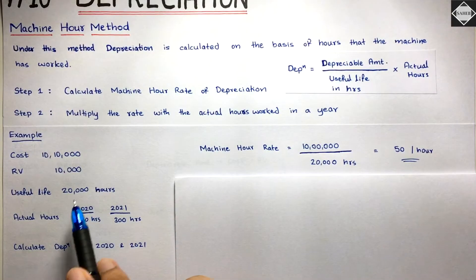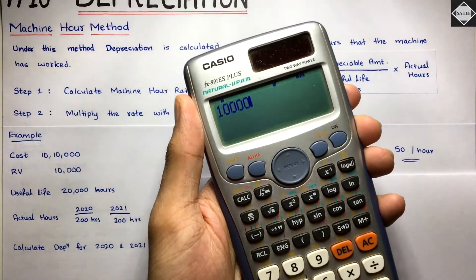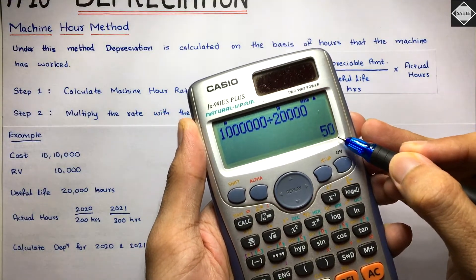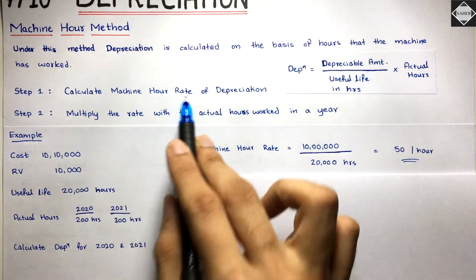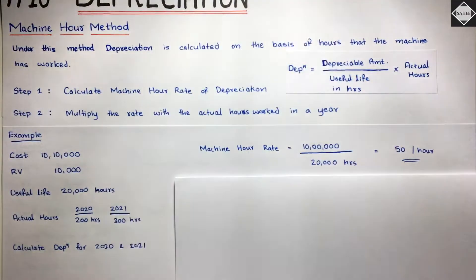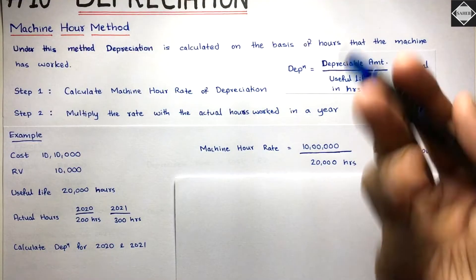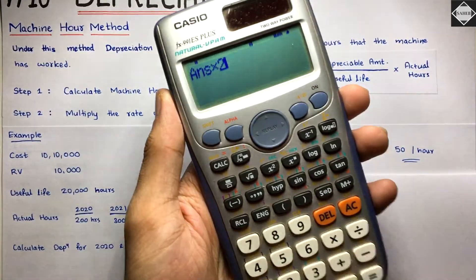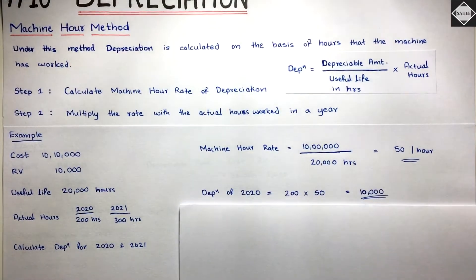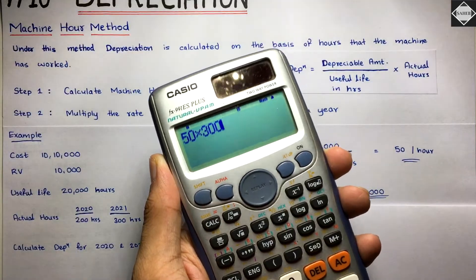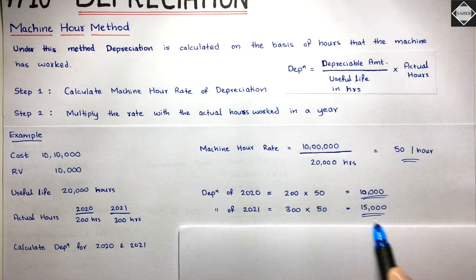Now multiply the Machine Hour Rate of 50 by actual hours. For 2020, the machine worked for 200 hours: 50 × 200 = 10,000. So depreciation for 2020 is 10,000. For 2021, the machine worked for 300 hours: 50 × 300 = 15,000. So depreciation for 2021 is 15,000. Simple and straightforward.